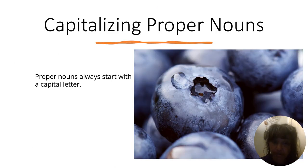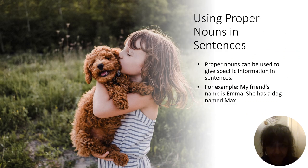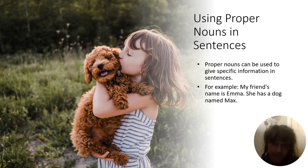Now remember, proper names always start with a capital letter. Using proper names in sentences — proper names can be used to give specific information in sentences. For example: 'My friend's name is Emma. She has a dog named Max.' Do you see the difference between the two?